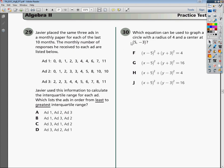Welcome. This is the Algebra 2 End of Course Test. This is the practice test, obviously. Test number 1, question number 30. Which equation can be used to graph a circle with a radius of 4 and a center of 5 and negative 3?